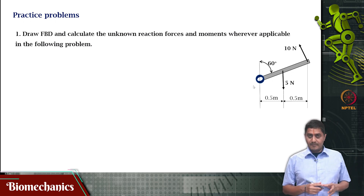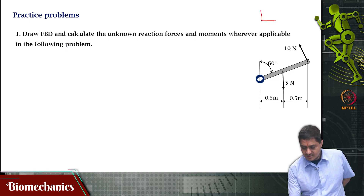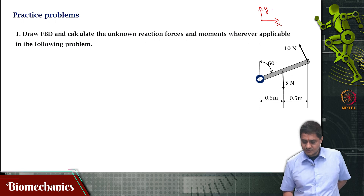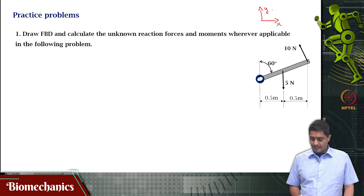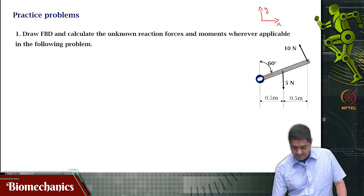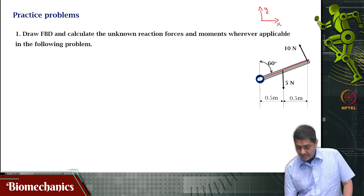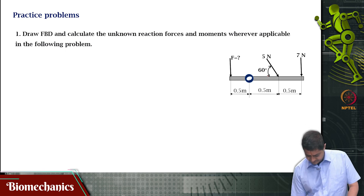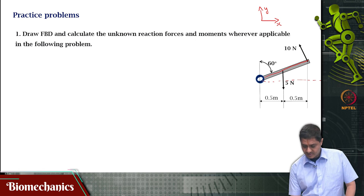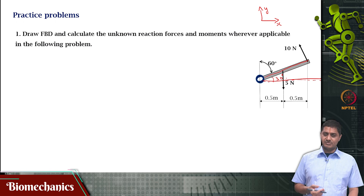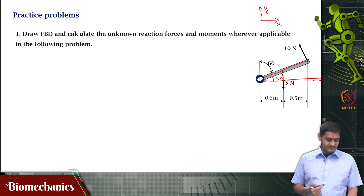Let us understand the situation. Consider the x-y axis. In the negative y direction there is a 5 Newton force acting. Perpendicular to this beam or bar, there is a 10 Newton force acting, which has a component in both the x direction and the y direction. This is because the bar is inclined at an angle of 30 degrees to the horizontal, or 60 degrees from the vertical. Because of this, the 10 Newton force applied on this bar will have two components — one in the x axis and one along the y axis.